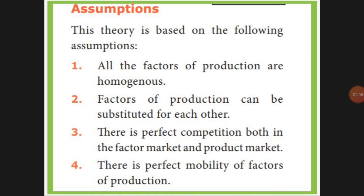This theory has some assumptions. The first assumption is that all factors of production should be homogeneous — that means they should be the same. Next, there should be substitutes for each other — a similar and exact substitute should be available, so that when you are using one product and choose another, that product should also be a similar and exact one.